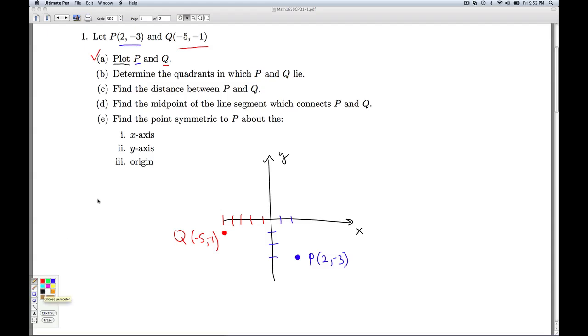Now for part B, we're asked to determine the quadrants in which P and Q lie. Remember the quadrants are labeled counterclockwise with Roman numerals. So this is quadrant one, quadrant two, quadrant three, and quadrant four. So we see that Q lies in quadrant three, and P lies in quadrant four.